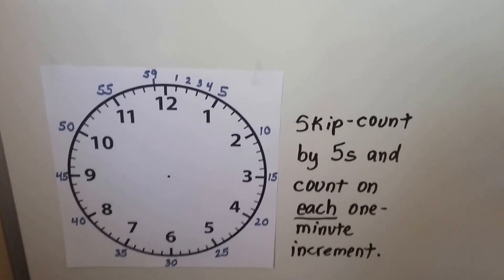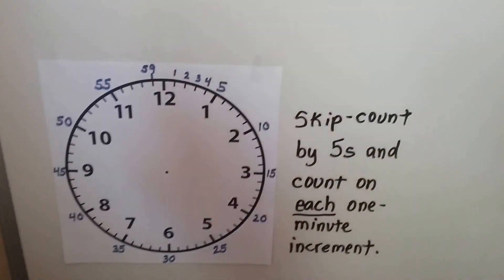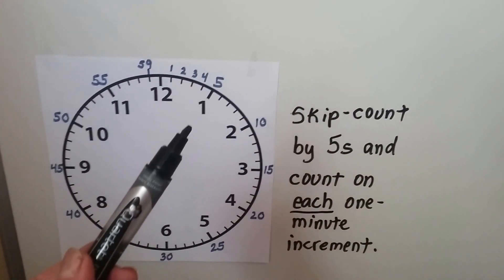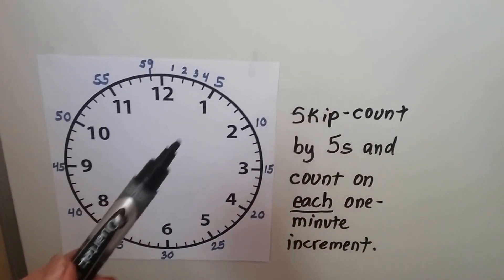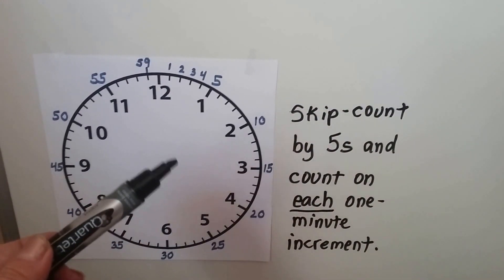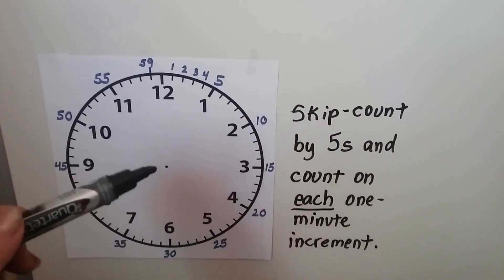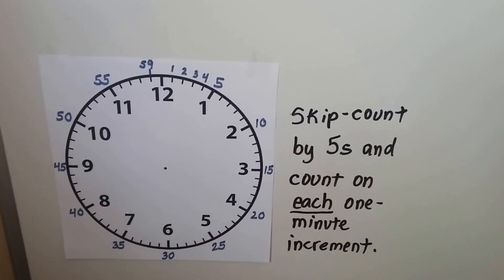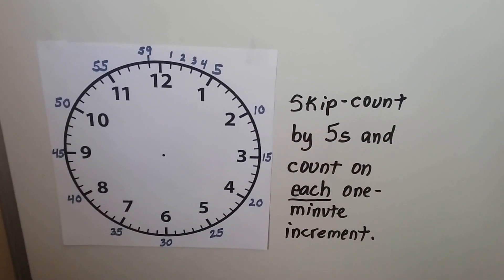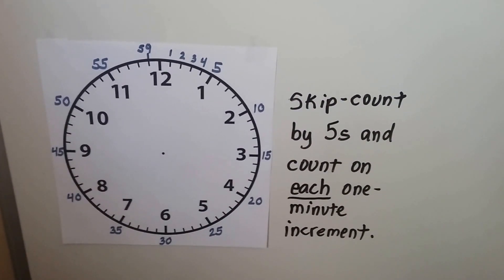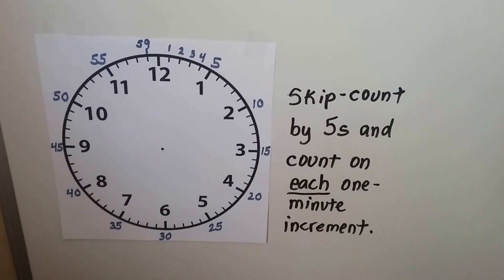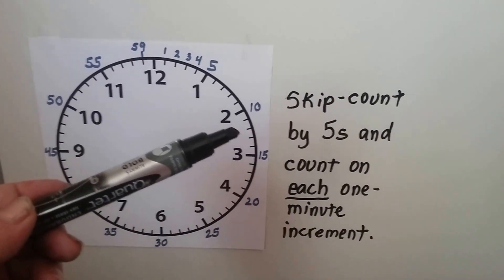We saw in the previous video that when the minute hand is pointing to the 1, it's at 5 minutes. When it's pointing at the 2, it's at 10 minutes, 15 minutes, 20 minutes. We can tell time to the minute by skip counting by fives and then counting on each one-minute increment. For example, if the minute hand is pointing in between markers, we would see that it's at 10 and then count 11, 12.